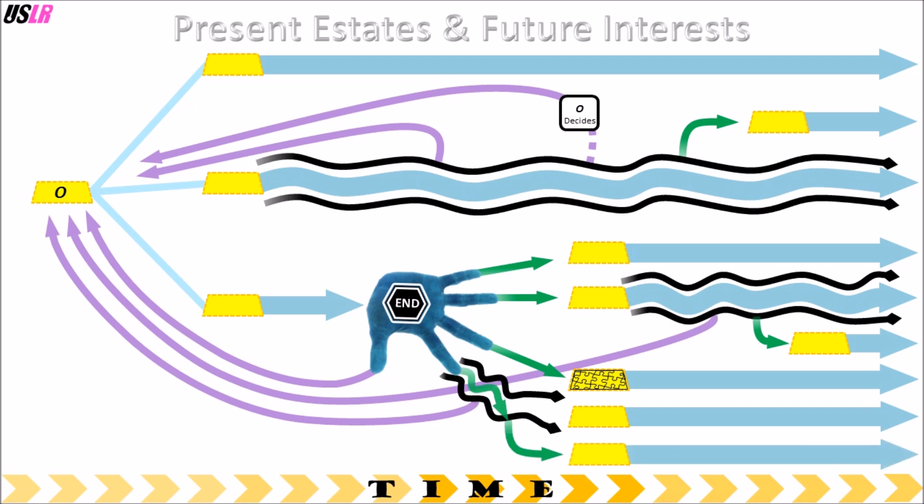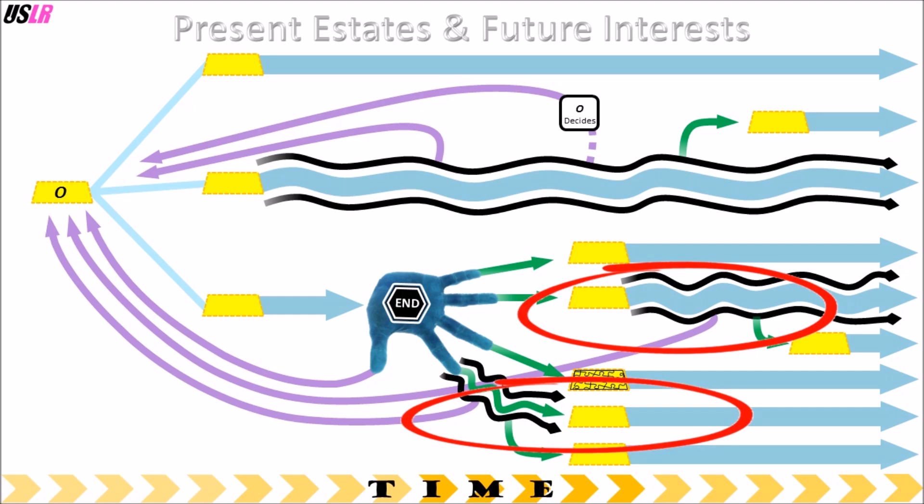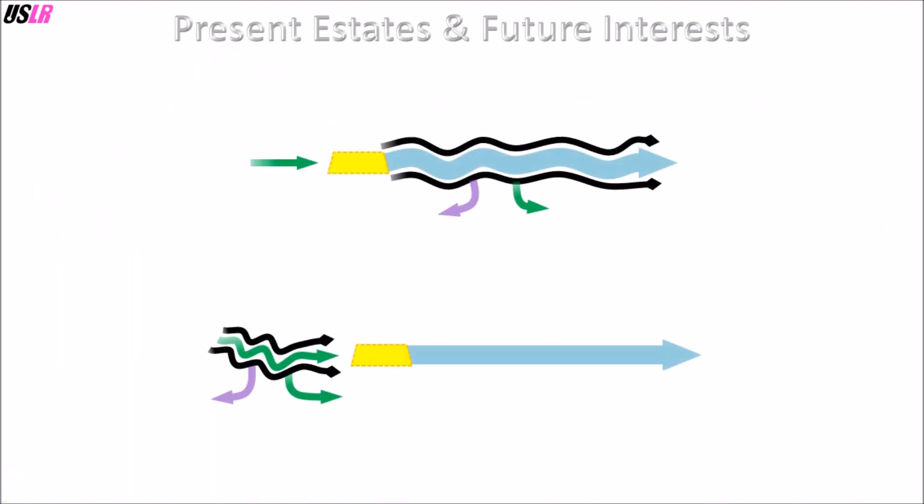Wait, didn't I already say that? I did. I repeated myself to make a point. To make sure that you understand from the beginning that there are two future interests that are fundamentally the same. They may have different classifications, different names, they visually look different as I portray them here, and they can be used in different ways. But they sometimes render the same result which makes them hard to distinguish on paper.